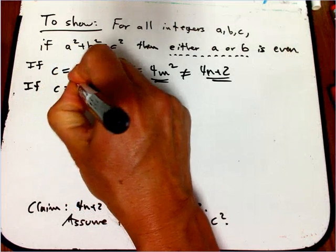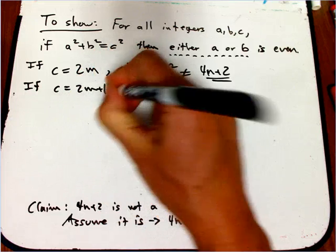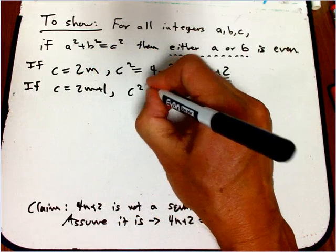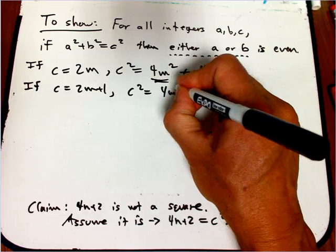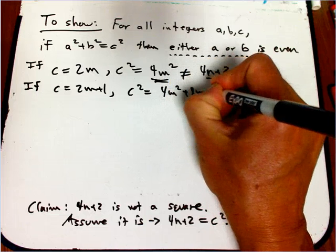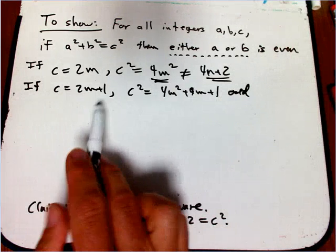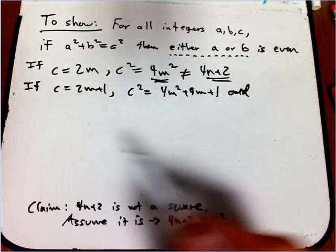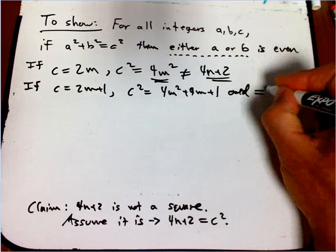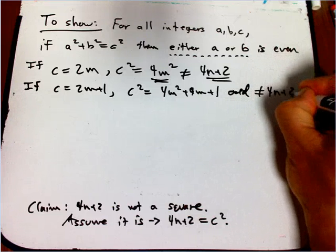If c was odd, then c squared would be 4m squared plus 4m plus 1. And that's odd. And that's a pretty easy thing. Odd times odd is equal to odd. And so that's certainly not equal to this even number 4n plus 2.